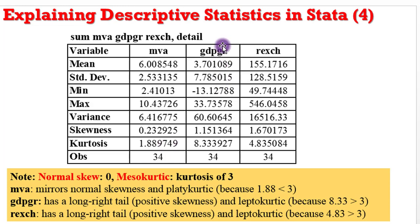For GDP growth rate, the skewness figure is 1.15, which tells us that GDP growth rate has a long right tail — meaning it is positively skewed, with more higher values above the sample average among the observations. Looking at the kurtosis value, it is 8.33, so GDP growth rate is clearly leptokurtic — because for a normally distributed curve the kurtosis value is 3, and 8.33 is definitely higher than 3. So this is a peaked curve, not a flattened surface like that of MVA. GDP growth rate is both leptokurtic and has a long right tail, simply because it has more observations with higher values above the sample average.